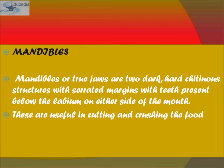Mandible is also known as the true jaw. They are two dark, hard, chitinous structures with serrated margins and teeth, present below the labium on either side of the mouth. They are useful in cutting and crushing food.